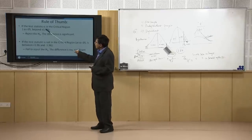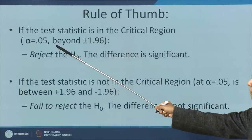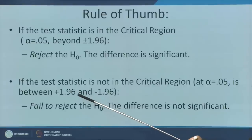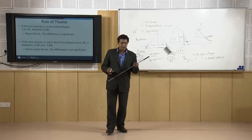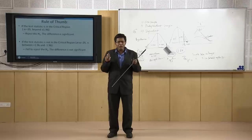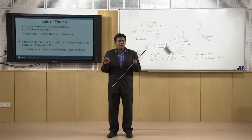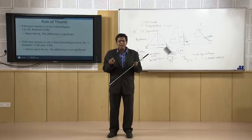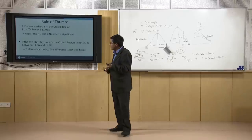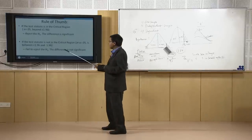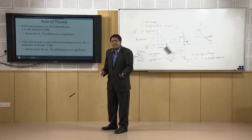As a rule of thumb: if the test statistic falls in the critical region (beyond ±1.96 at 95%), reject H0 — the difference is significant. If it falls between −1.96 and +1.96, we do not say we 'accepted' the null hypothesis. The correct phrasing is: we failed to reject the null hypothesis. The difference is not significant and may have occurred by chance.